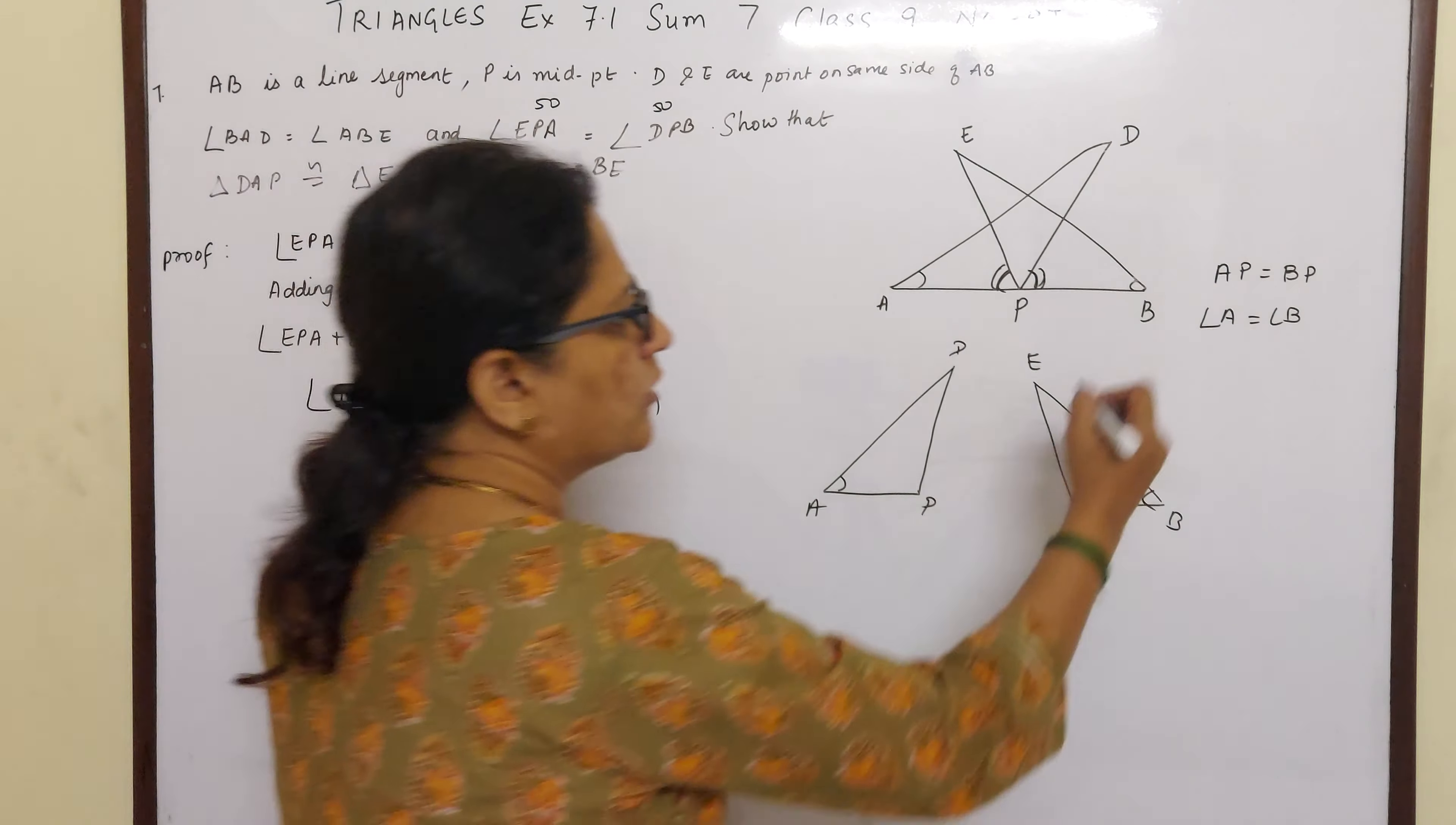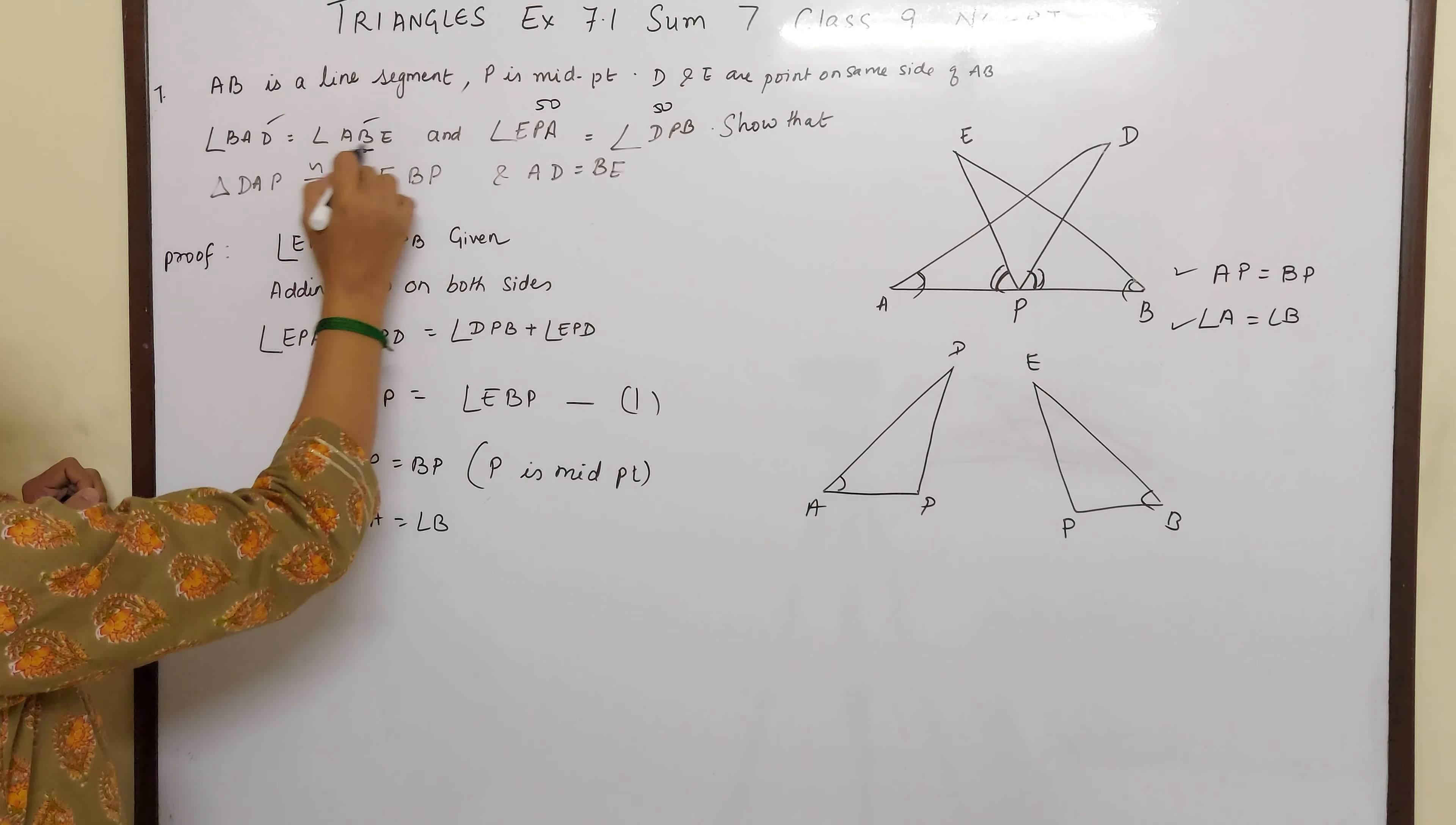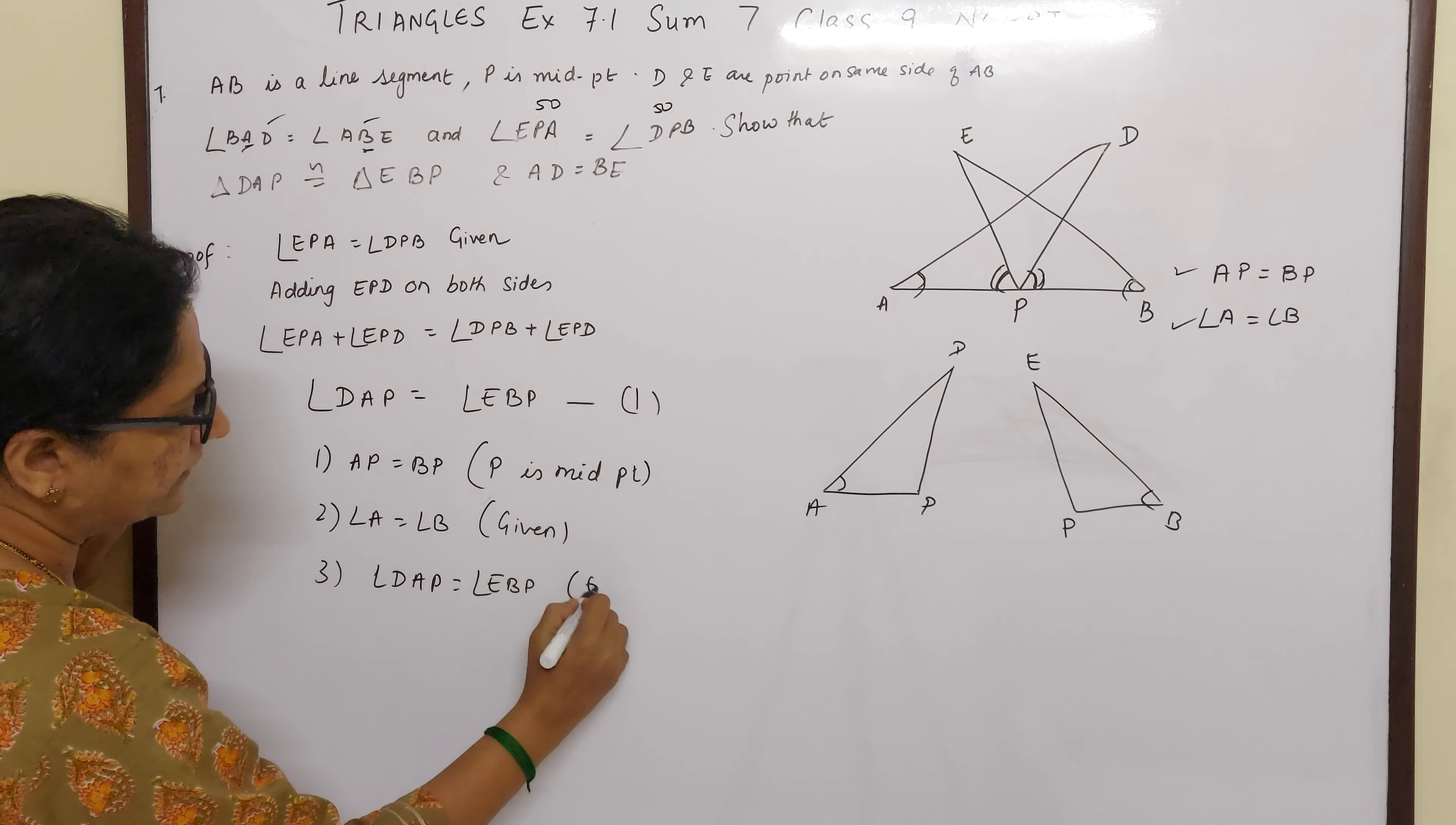We already know AP is equal to BP and angle A equal to B. So that we will write: AP is equal to BP, because P is the midpoint. And angle A equal to angle B, because they are marked and given in here. A is equal to B, given. And here we just now proved that angle DAP is equal to EBP from 1.